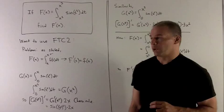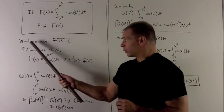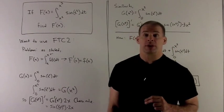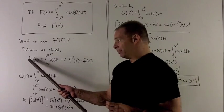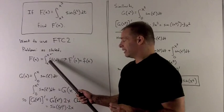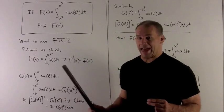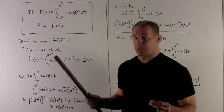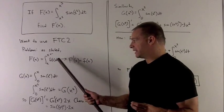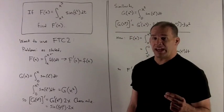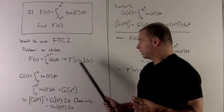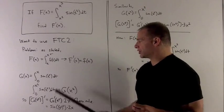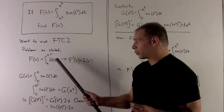So on the surface, this is screaming use fundamental theorem of calculus 2, which just says if I had big F of X defined as definite integral from A, a constant, to just plain old X of f t dt, then I can say the derivative of big F of X is equal to little f of X. So just take the integrand and put an X where there was a t.